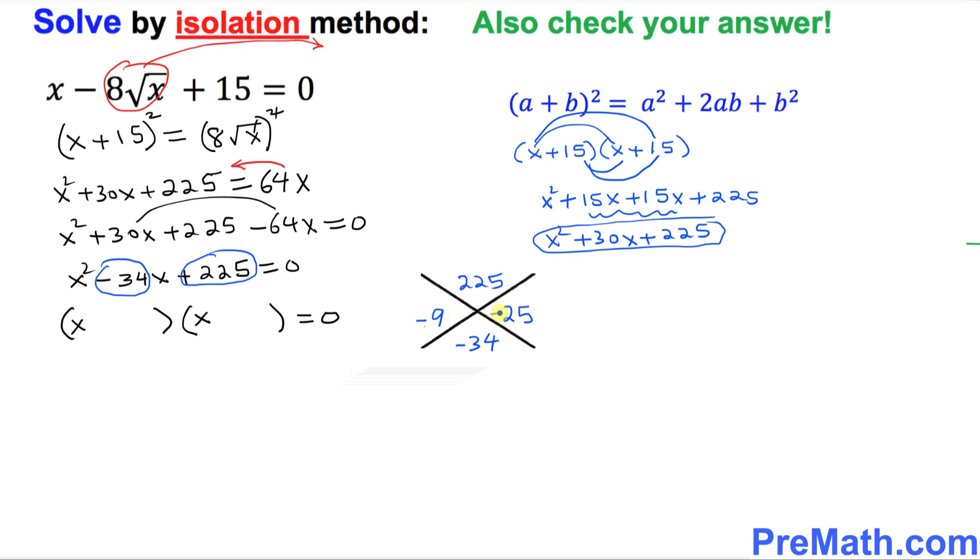So this is going to be a negative sign. This is going to be a negative sign. So we got these two factors. So let's put down these two factors. Negative 9 is going to come over here. And negative 25 is going to come over here.